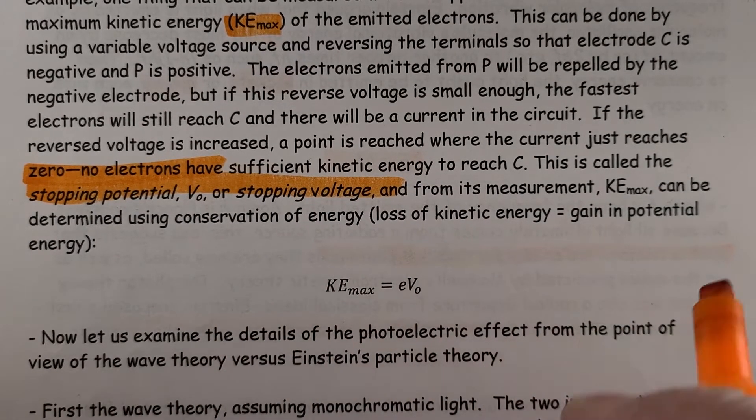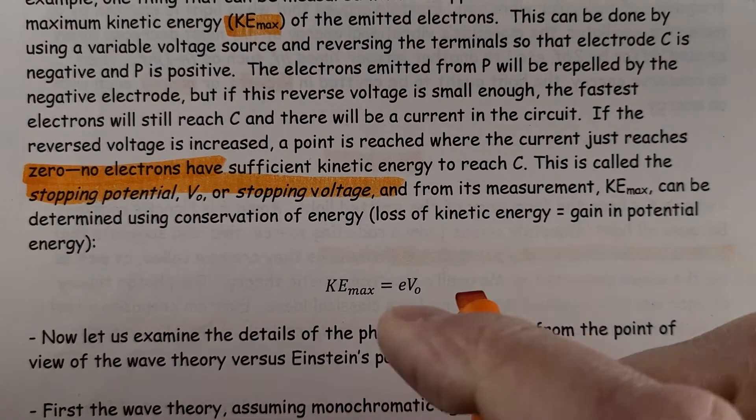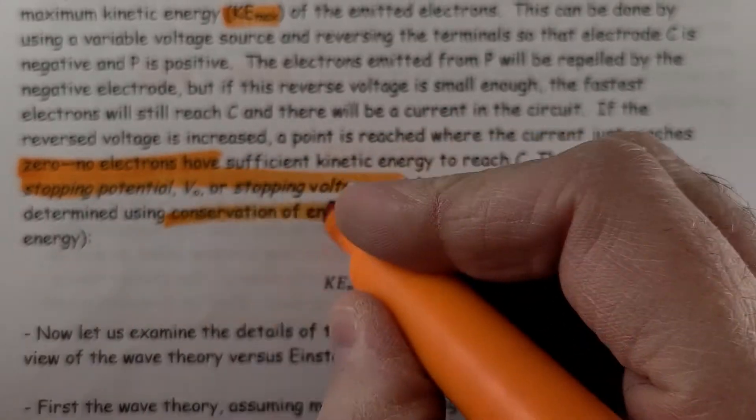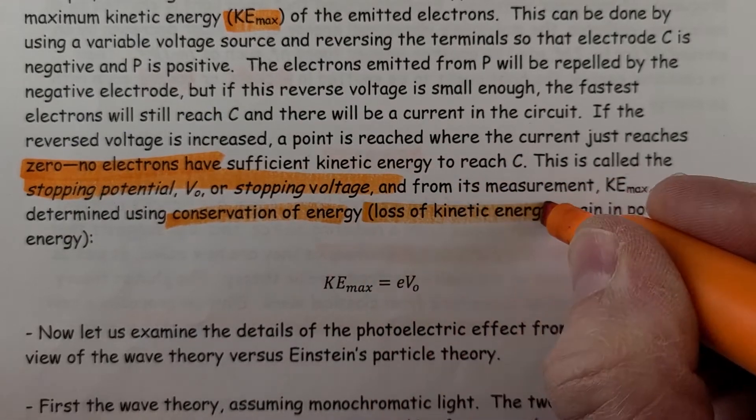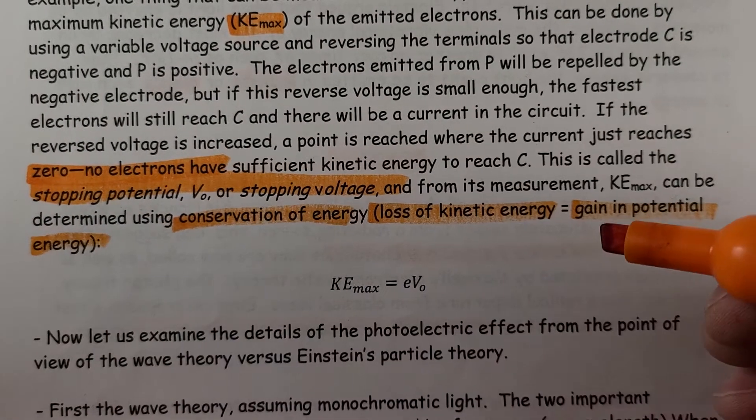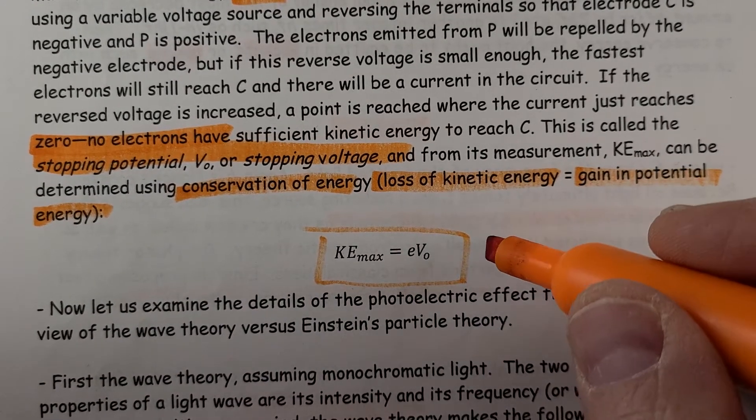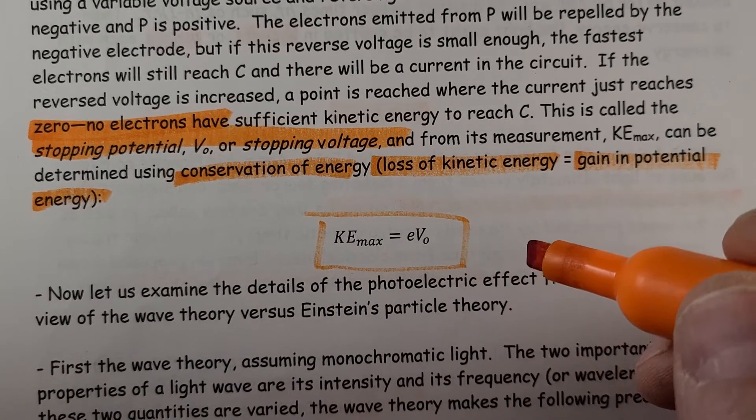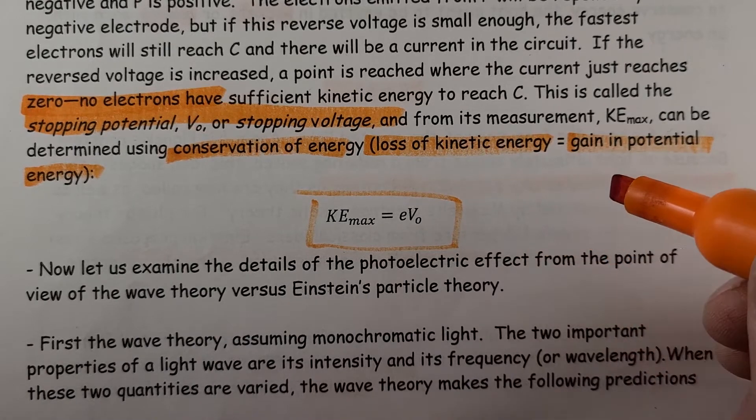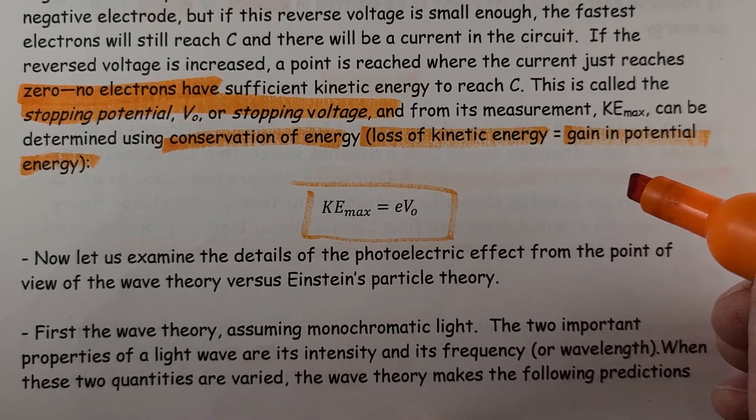So from the measurement, kinetic energy max can be determined using the conservation of energy, so the loss of kinetic energy must be gained in potential energy. So that stopping potential voltage gives us an idea of what that kinetic energy is of those electrons. So that's how we can measure that.